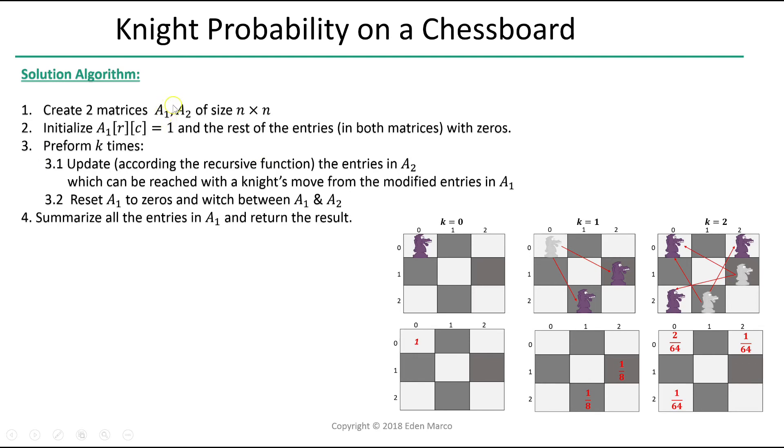A sub 1 will hold the results after the kth step and A sub 2 will hold the results after the k minus 1th step. In the second step, we initialize A sub 1 at entry r, c to 1 and the rest of the entries in both matrices we initialize to 0s.